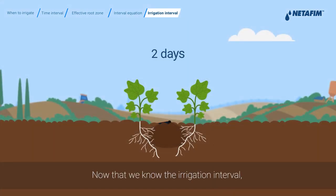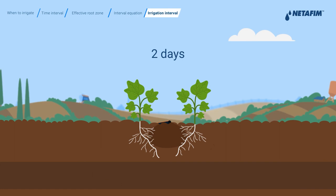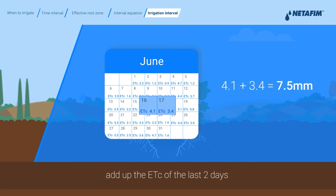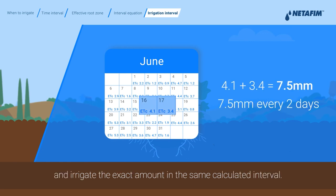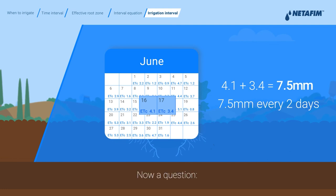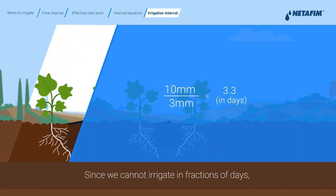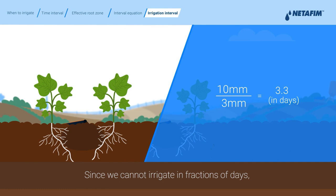Now that we know the irrigation interval, we can be even more precise. Instead of max ETC, add up the ETC of the last 2 days and irrigate the exact amount in the same calculated interval. Now a question: what if we had different values in the equation and the interval was 3.3? Since we cannot irrigate in fractions of days, we round off the result — in this case, we round down to 3 days.